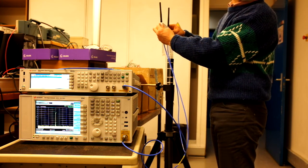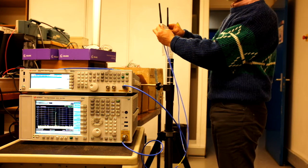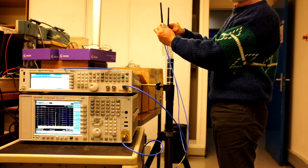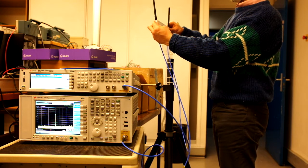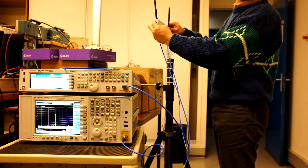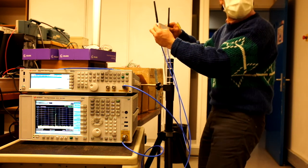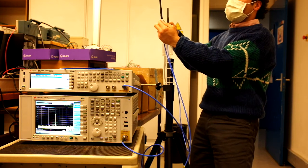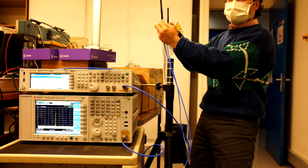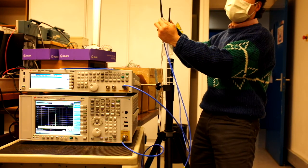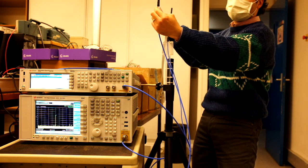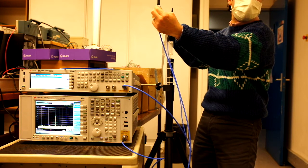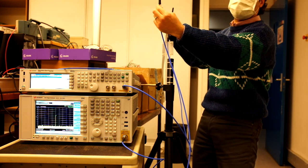So first we do a measurement at 12 cm. I have measured minus 23.2 dBm of received power on the spectrum analyzer. Now we double the distance to 24 cm and I measured minus 29.5 dBm. Now I am going to double the distance to 48 cm and you can see a decrease on the spectrum analyzer. We are now at minus 36 dBm.